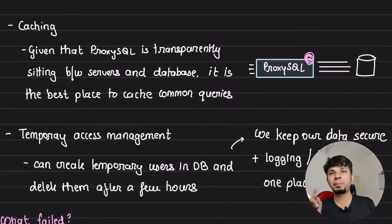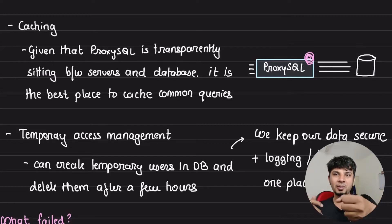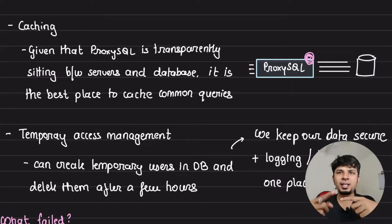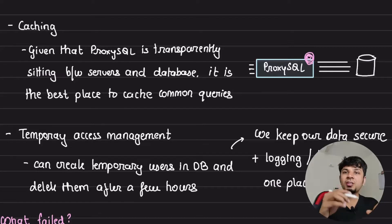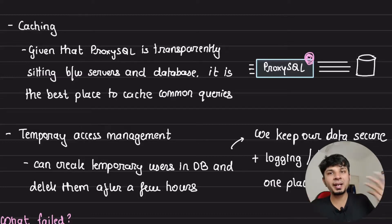The third advantage is caching. Once you have a proxy layer in between, you can cache SQL query responses. For example, 'SELECT * FROM users WHERE id = 10' can be cached on ProxySQL for, say, a minute. Until that cache is invalidated, the request doesn't even reach the database — ProxySQL has the cached response and just sends it back.